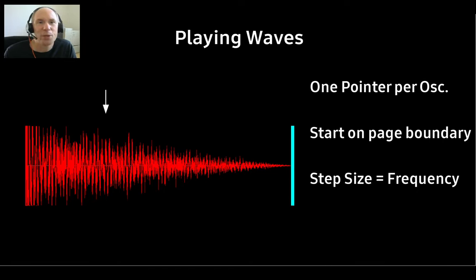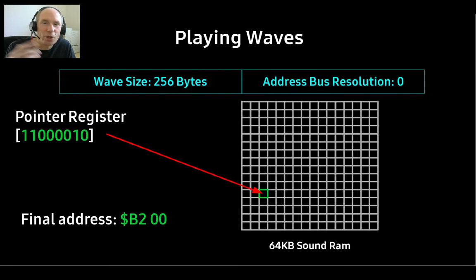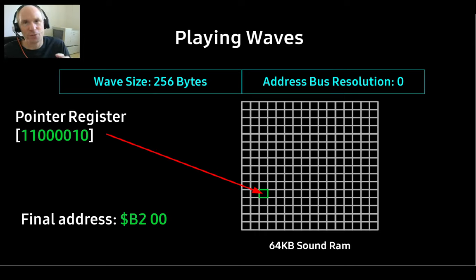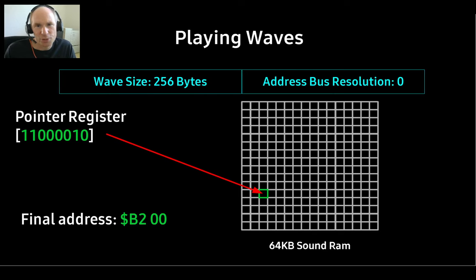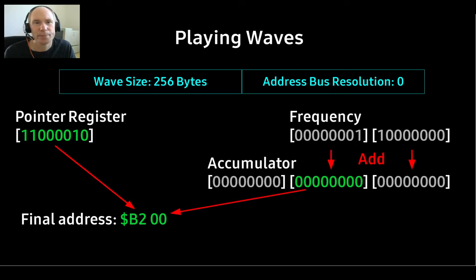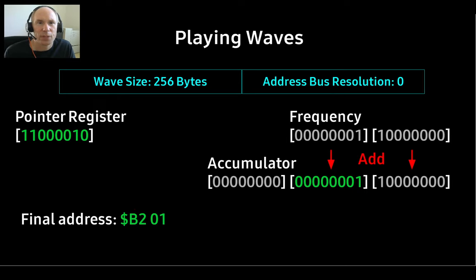Now let's talk about how the oscillators play their waves. Each oscillator has its own pointer into the sound RAM called the accumulator. To determine the exact place where the oscillator reads from is complicated. First, we have to set the wave size — let's start with 256 bytes. The oscillator's pointer register points to a page in the 64K sound RAM, for example hex B2. When we start the oscillator, it'll start to play from B200. It picks its byte and moves to the next location by adding the value from the 16-bit frequency register to the oscillator's 24-bit accumulator.